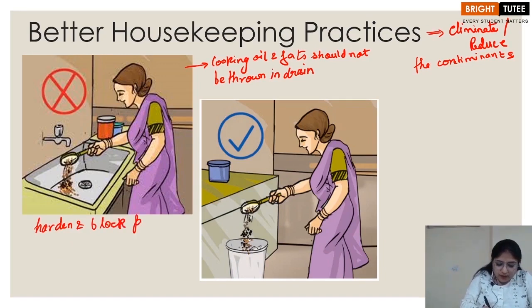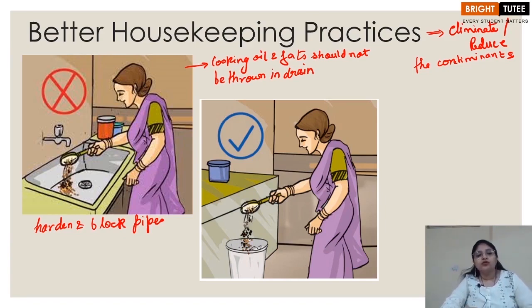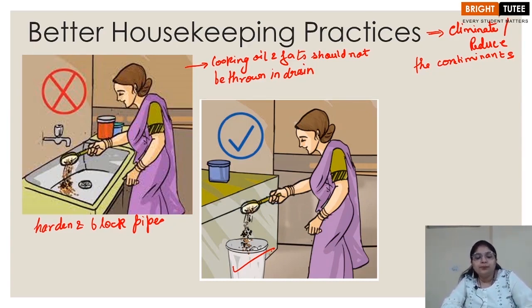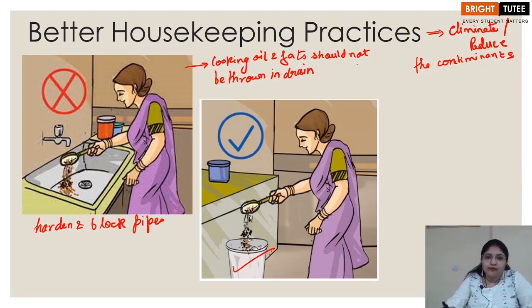The consequences of pouring cooking oil down the drain are that the fats become hardened and block the pipes. Fats also include ghee — if it is wasted, instead of throwing it into the drain you should throw it into the dustbin. This can be disposed of easily through the garbage system. We should not throw cooking oil and fats into the drain because these will eventually harden and block the pipe.